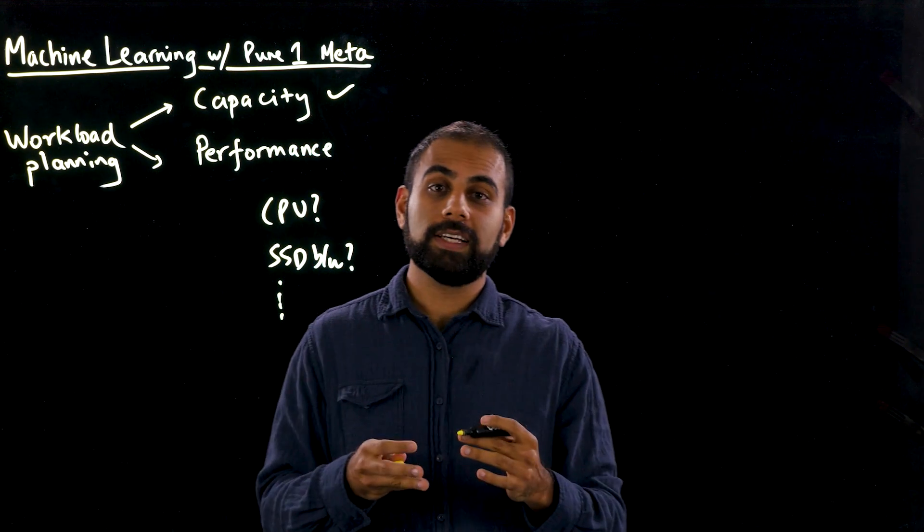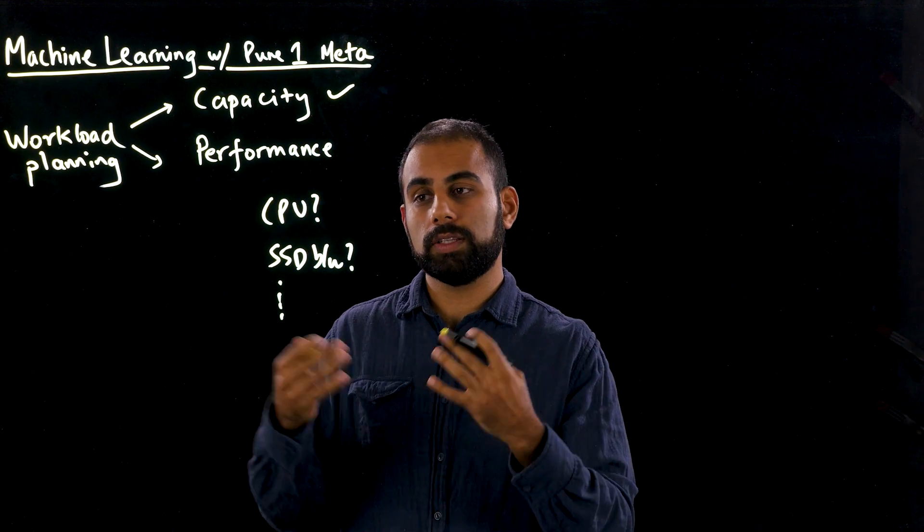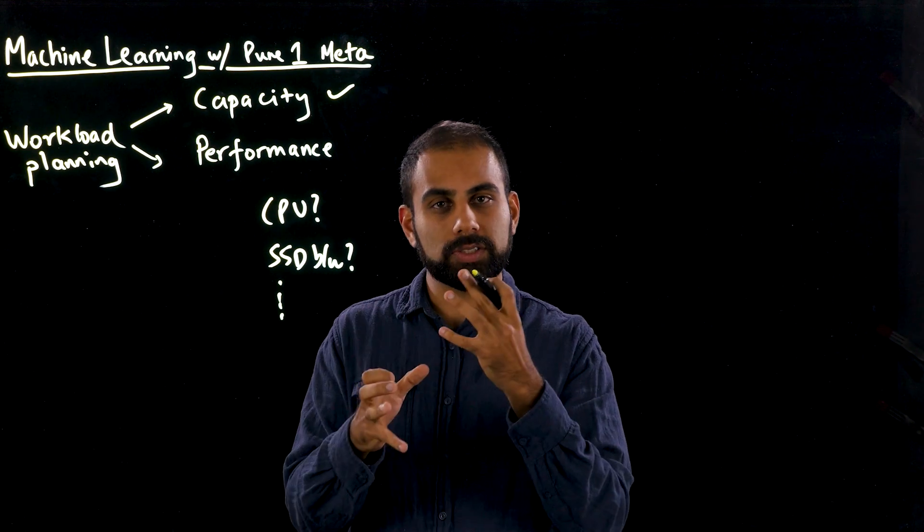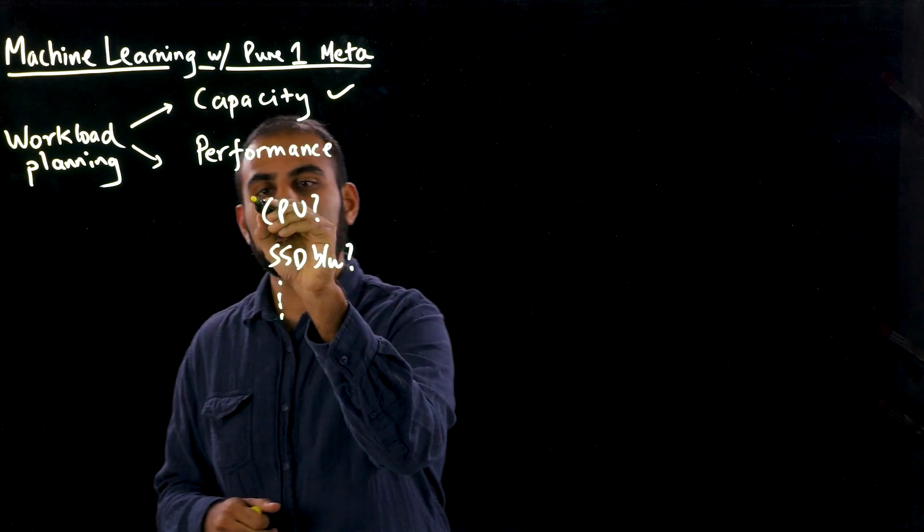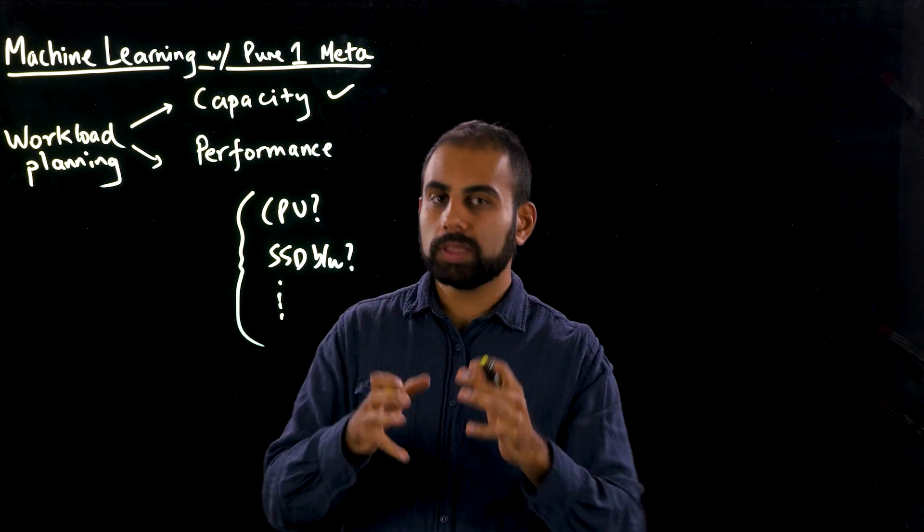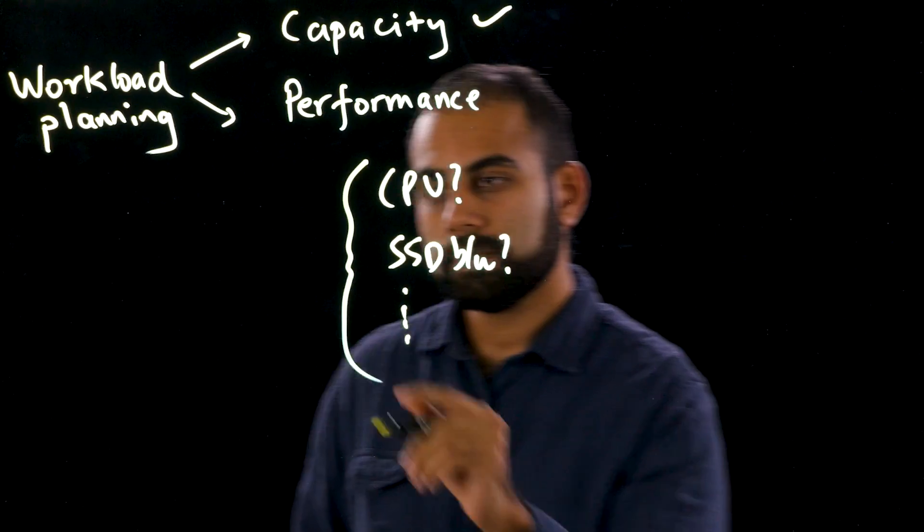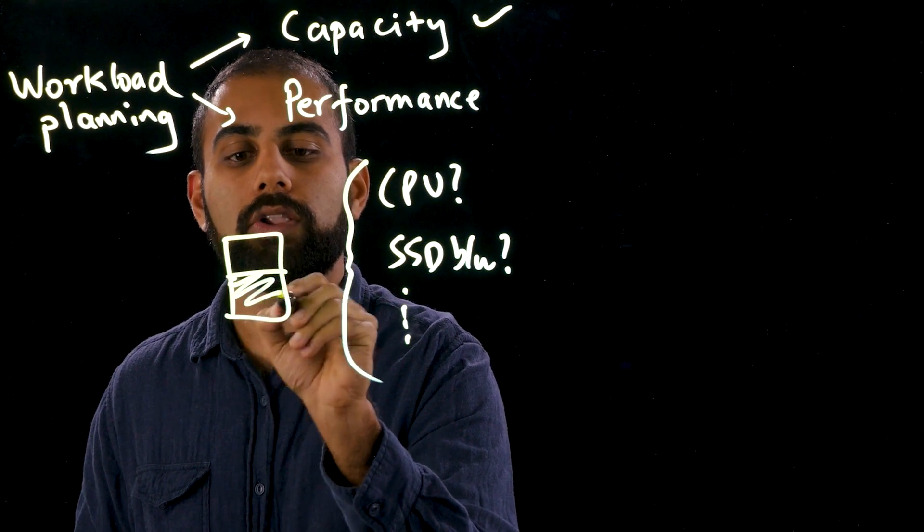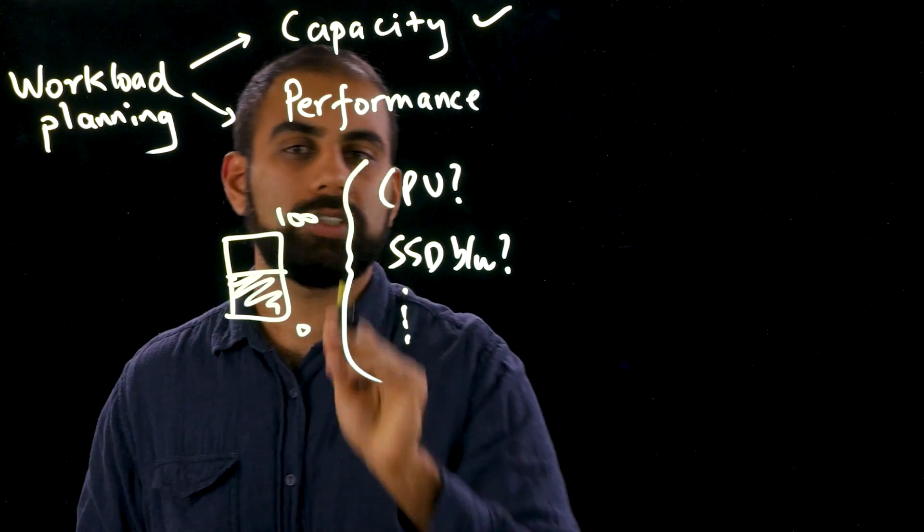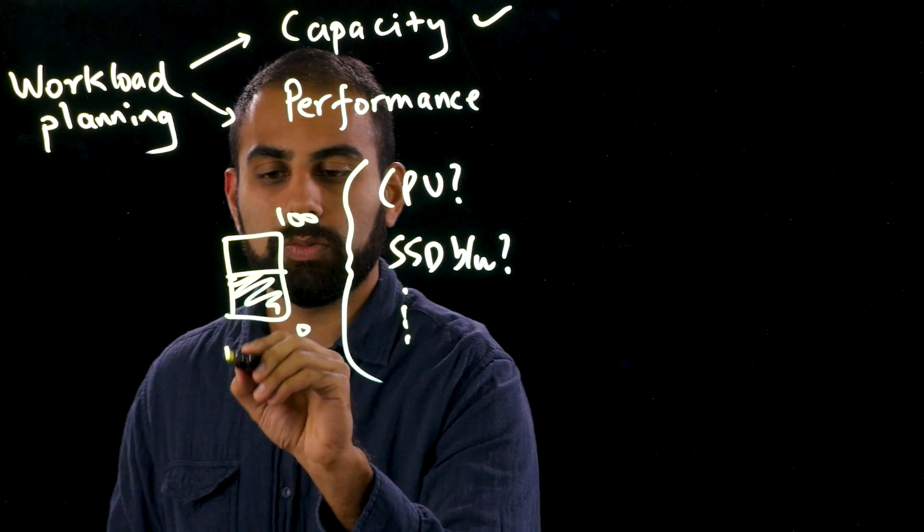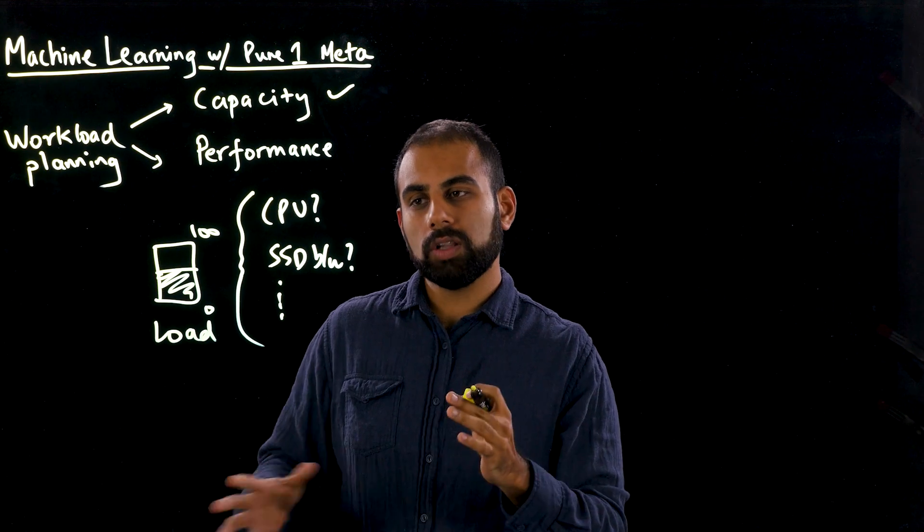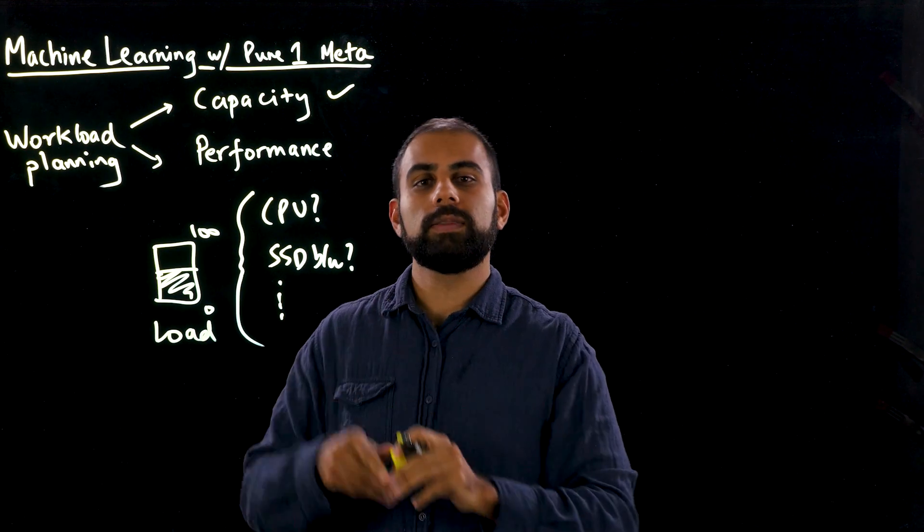So the first thing that we decided to do here on the data science team is say, how can we combine all of these internal measures off an array and come up with a simple number that tells us what the performance looks like? And that's how we came up with the idea of load, which is a simple percentage between zero to 100. And it intends to capture all of the interaction between these variables.